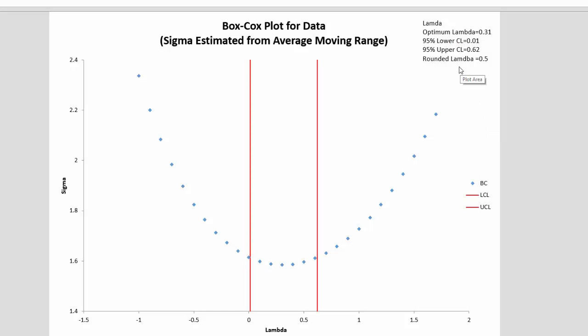Then there's something called the rounded lambda. What the rounded lambda value is, the program searches within the confidence interval and says, is there a whole number or a half within there? And if it is, that becomes the rounded lambda. In this case, it's 0.5, because 0.5 falls within our confidence interval.